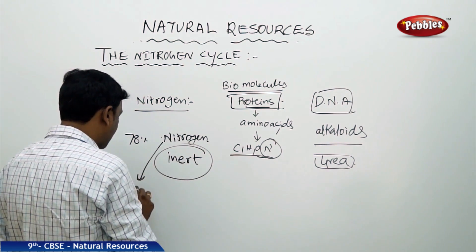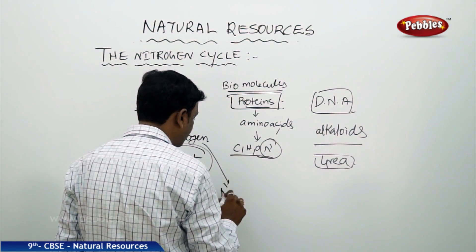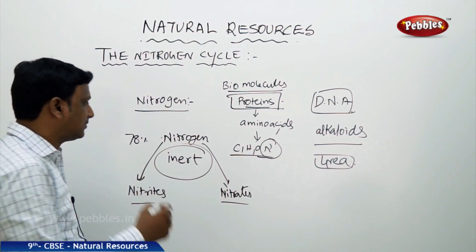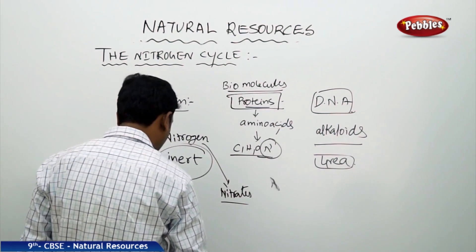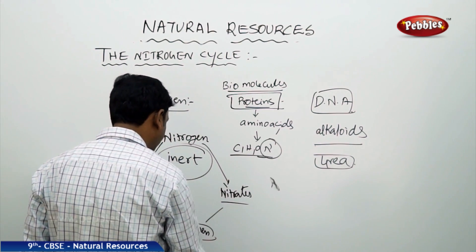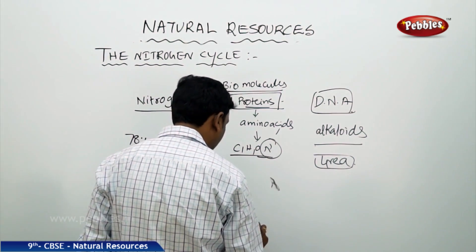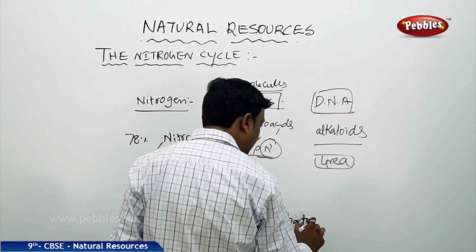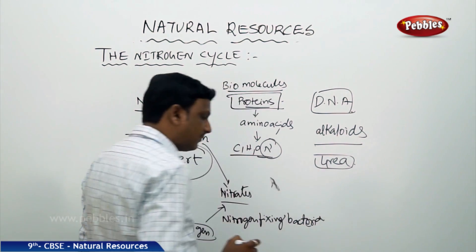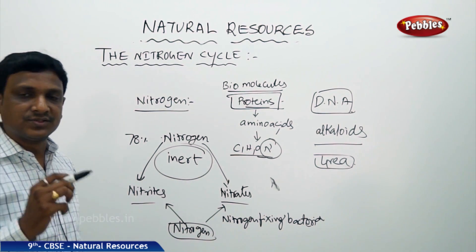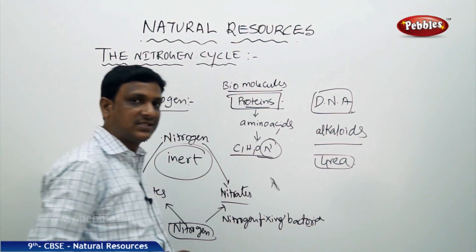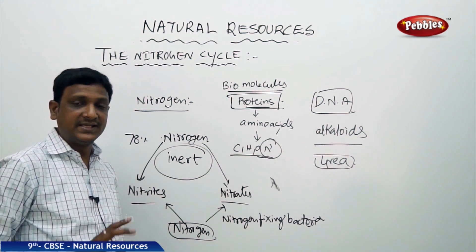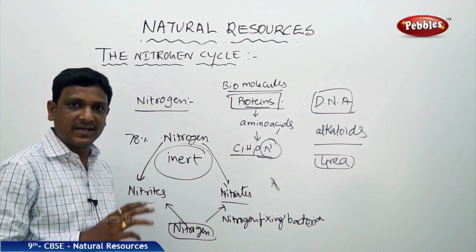Nitrogen should be in the form of nitrites or nitrates. But how does atmospheric nitrogen turn into nitrites and nitrates? The nitrogen converts to nitrites and nitrates by nitrogen-fixing bacteria. Nitrogen-fixing bacteria are a special kind of bacteria found in the root nodules of some dicot — leguminous — plants. Sometimes they may be living free and sometimes they are associated with the root nodules of leguminous plants. These nitrogen-fixing bacteria convert the atmospheric nitrogen into nitrites or nitrates.